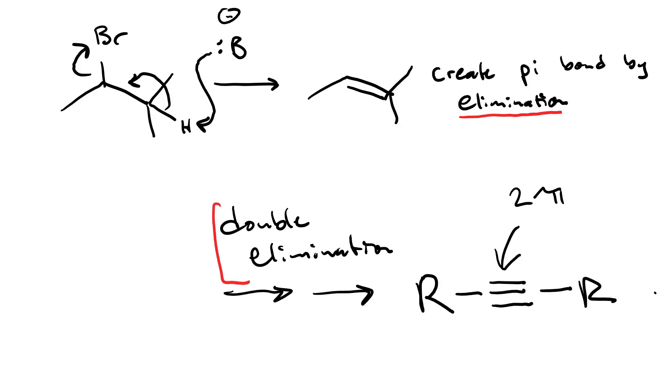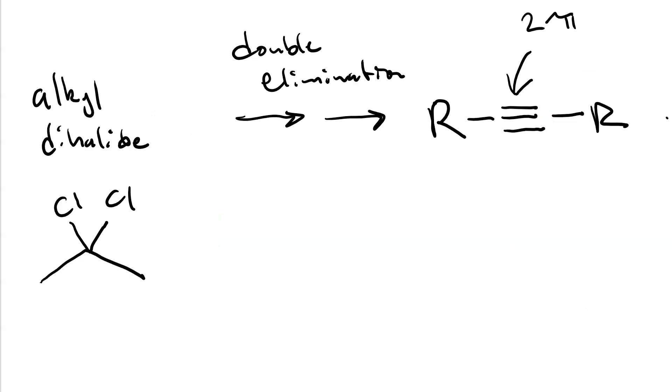And if we're going to do double elimination, that means we need to eliminate two things. So our substrate should be an alkyl dihalide. So here's a simple alkyl dihalide. It is a three-carbon chain with two chlorines both attached to carbon number two. In other words, 2,2-dichloropropane.